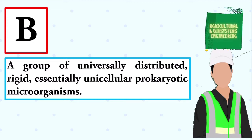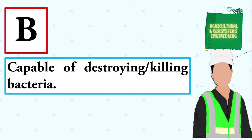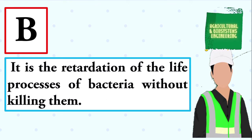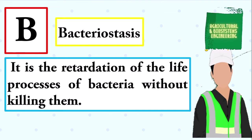A group of universally distributed, rigid, essentially unicellular prokaryotic microorganisms. The answer is: bacteria. Capable of destroying or killing bacteria. The answer is: bactericidal. It is the retardation of the life processes of bacteria without killing them. The answer is: bacteriostasis.